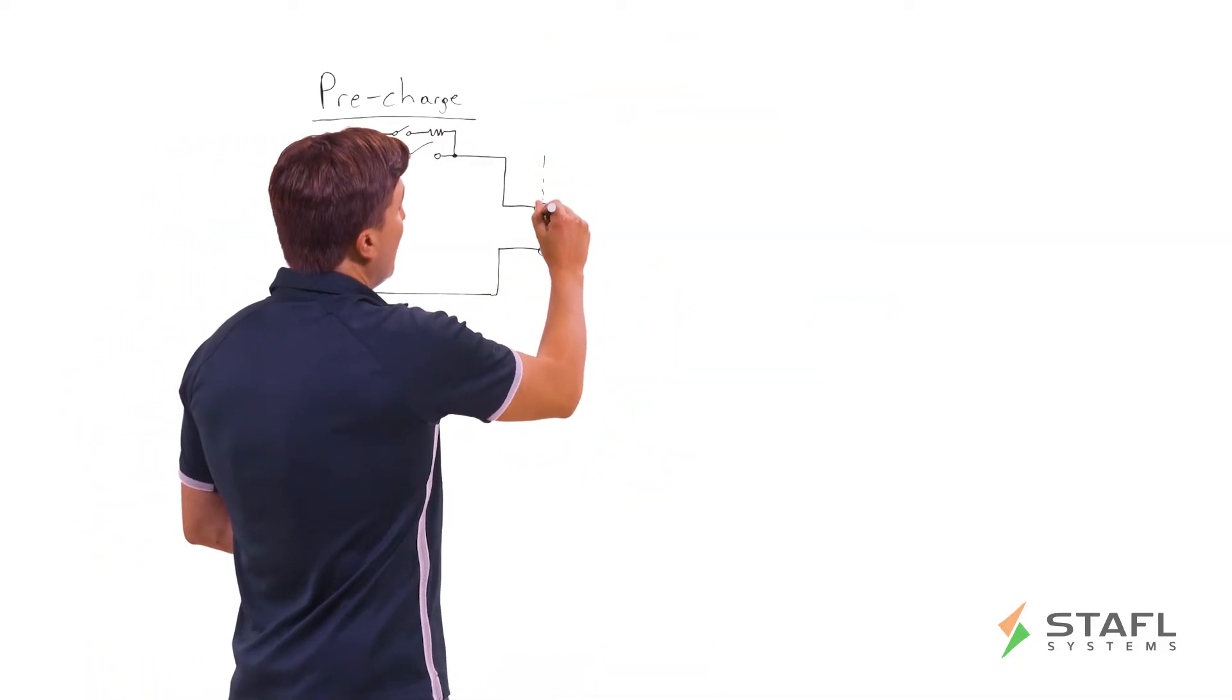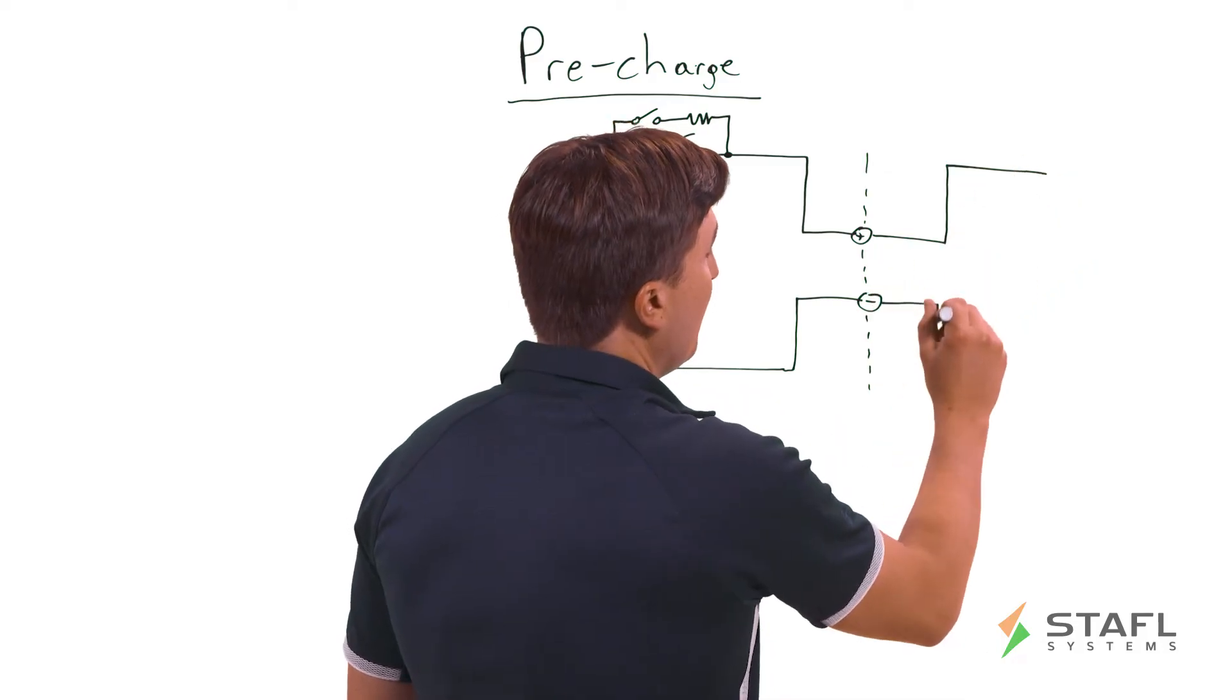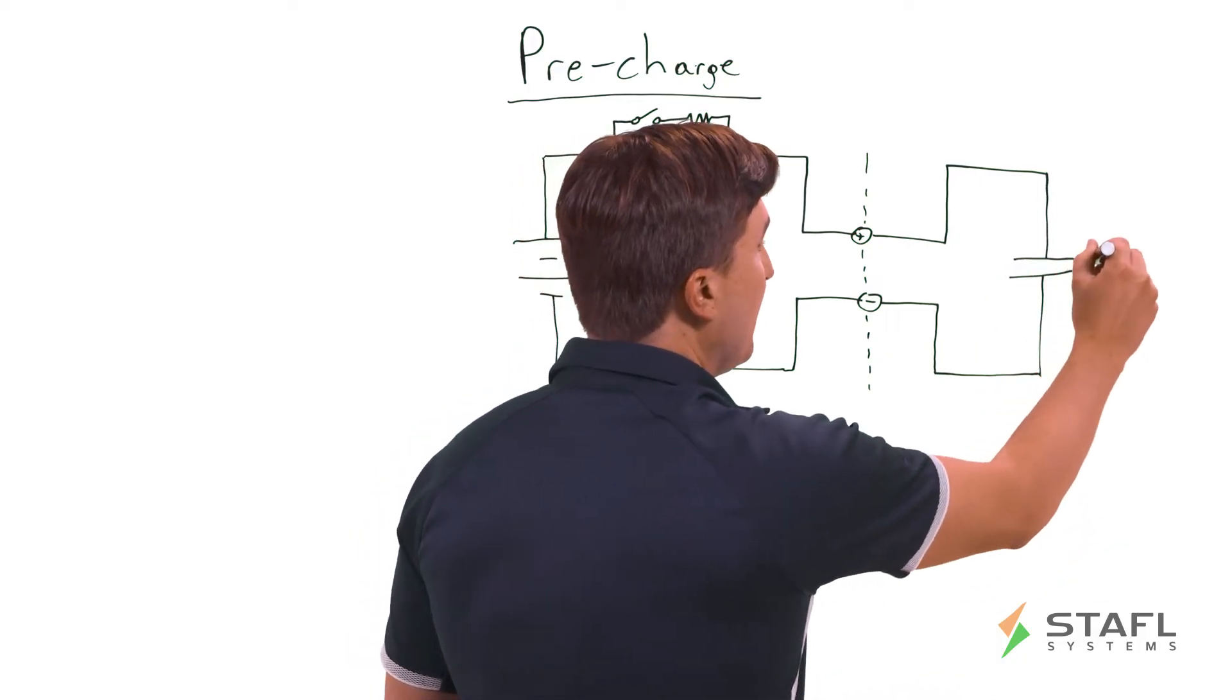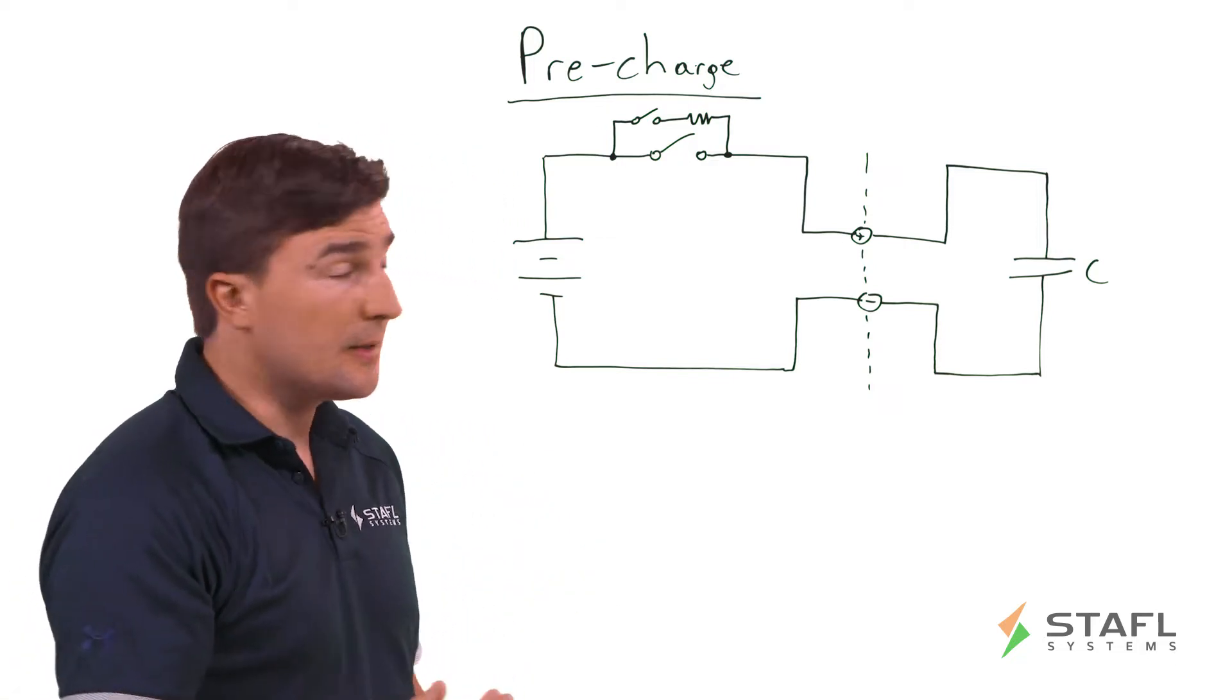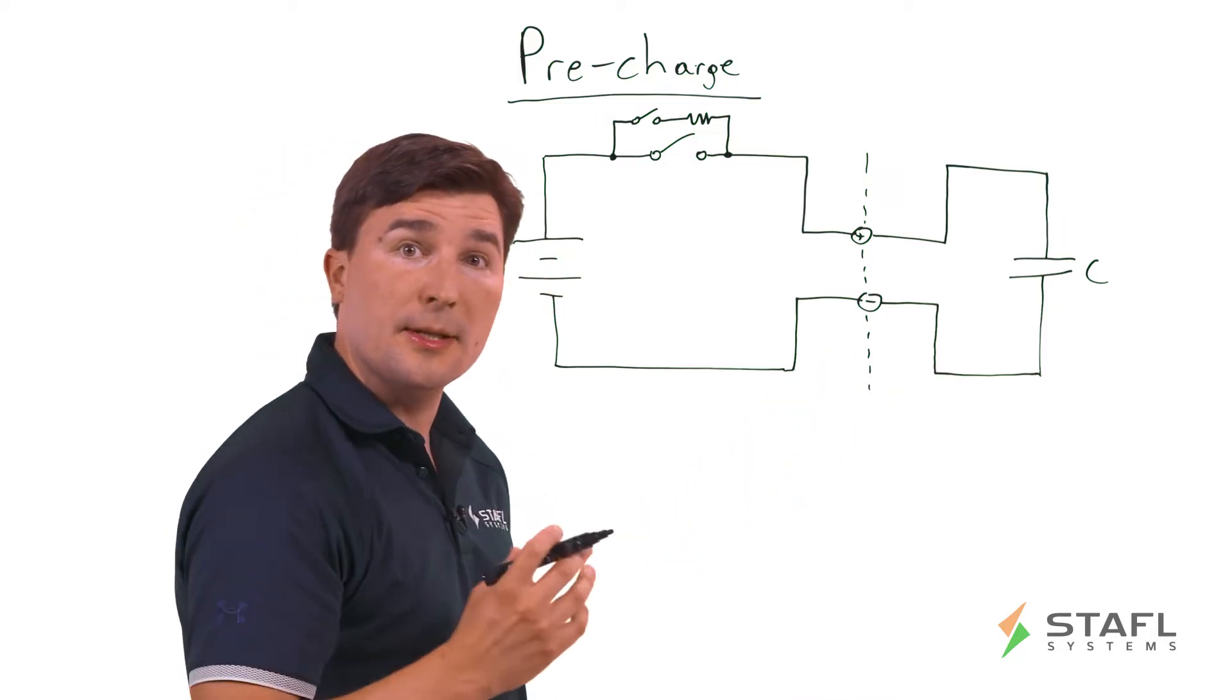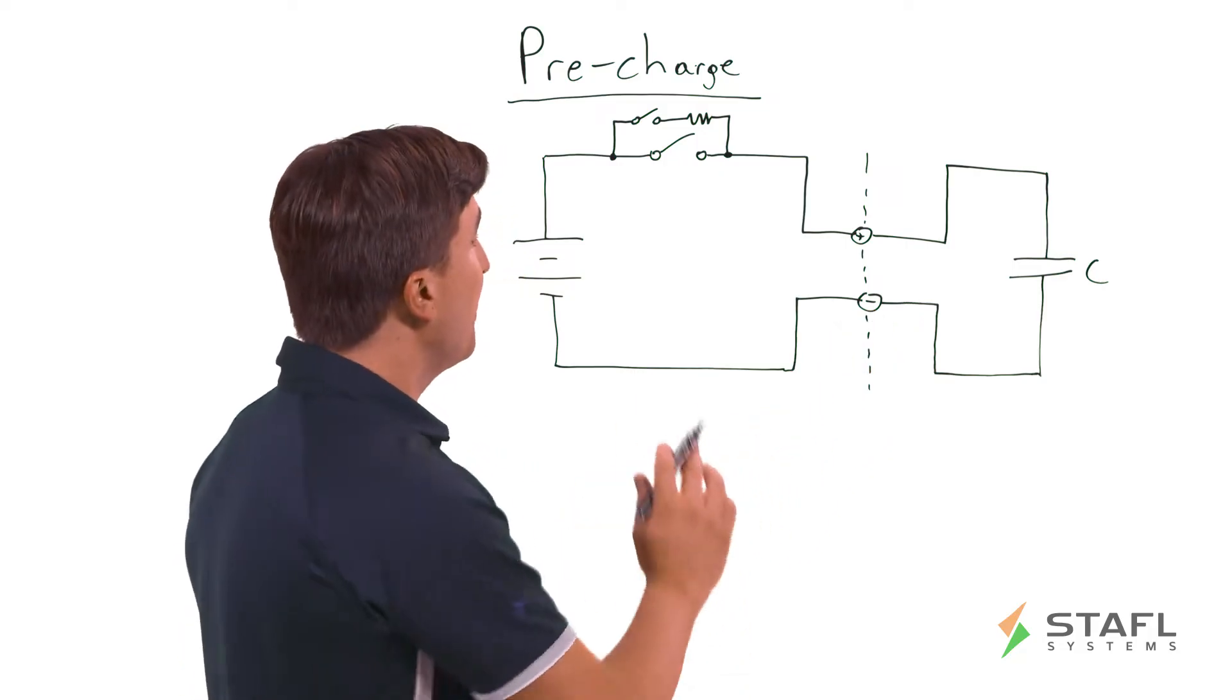So why is a pre-charge circuit necessary in the first place? Well typically it's because the external system connected to a lithium-ion battery pack has a rather large or significant capacitance. This can be a three-phase motor inverter, this can be a grid tie system for charging and discharging. There's a variety of power electronics and typically they have a filter capacitance for their high frequency switching. And this capacitance makes it absolutely necessary to have a pre-charge circuit.